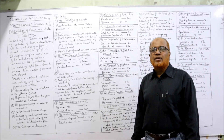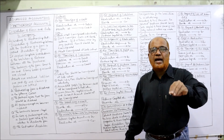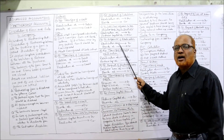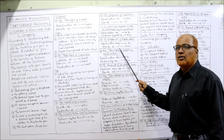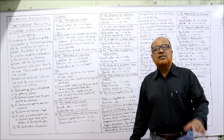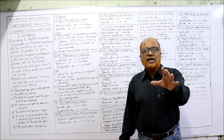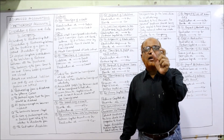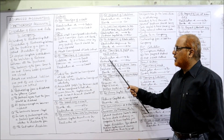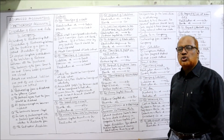For expenses of Realization: for the winding-up procedure, some realization expenses are paid. Entry: Realization Account debit, Bank Account credit. For transfer of profit on Realization: after passing all entries, the Realization Account may show a profit or a loss. If there is a profit, entry is Realization Account debit, Partner's Capital Account credit.